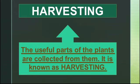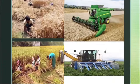Harvesting is the collection of useful parts of plants — flowers and fruits. In some plants the fruits are harvested; in some plants, parts like stem, leaves, flowers, and seeds are harvested. Harvesting is done by people or with the help of machines.